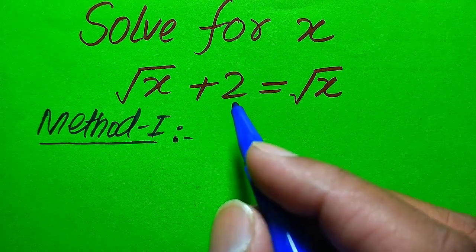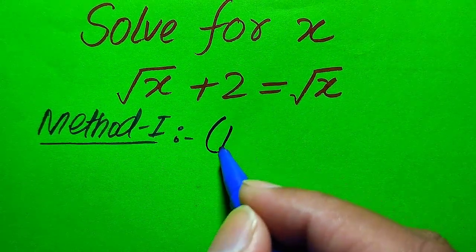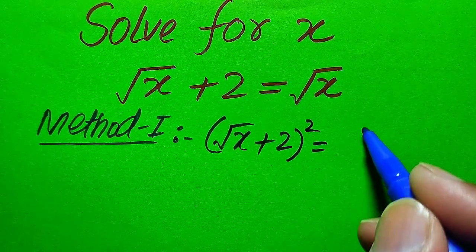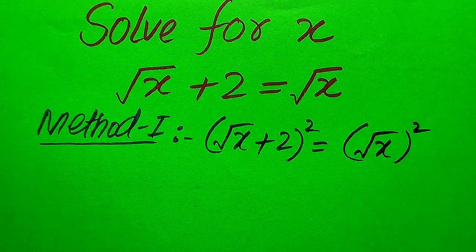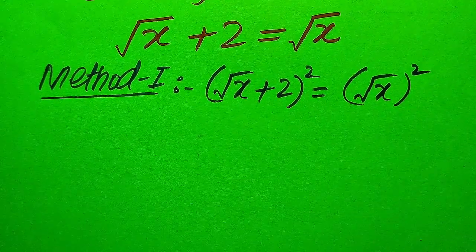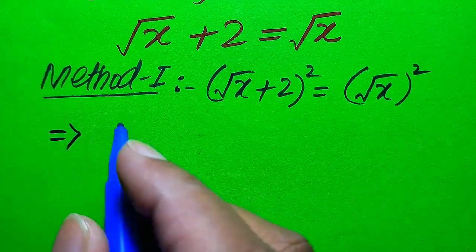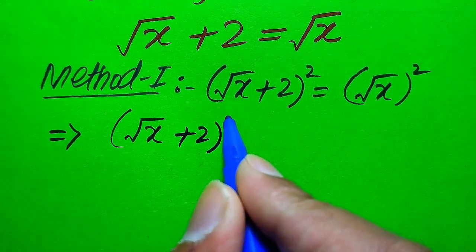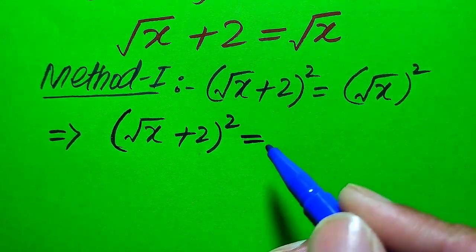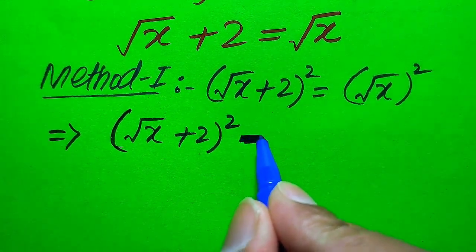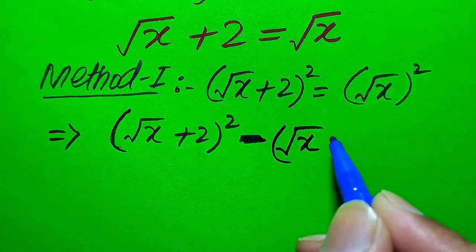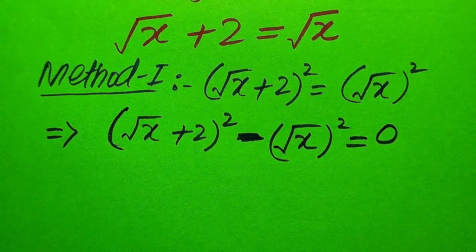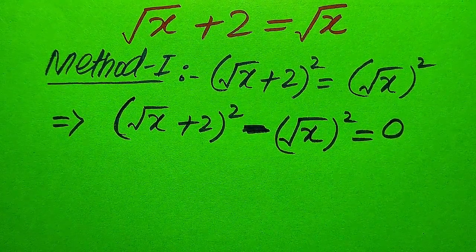The very first thing we are going to do is take squaring on both sides. When we take squaring, it is written as: square root of x plus 2, whole squared, equals square root of x, whole squared. Further, we move the terms from the right-hand side to the left-hand side, giving us: square root of x plus 2 whole squared minus square root of x whole squared equals zero.